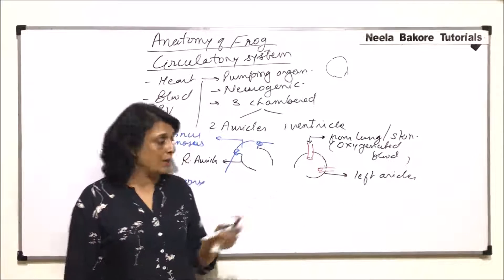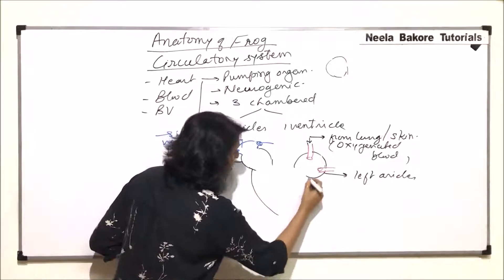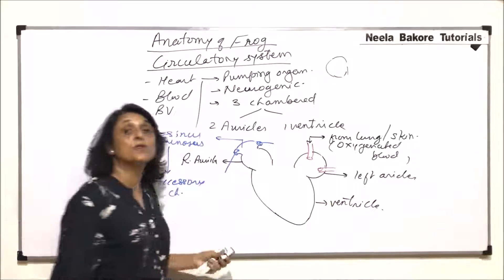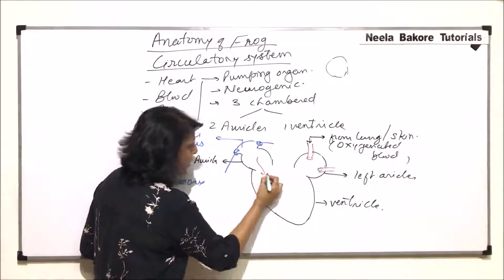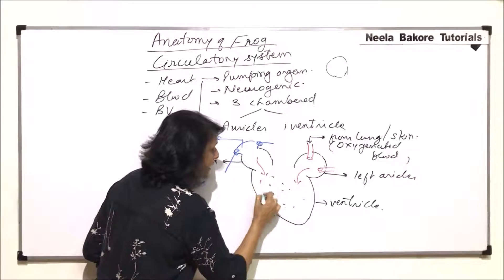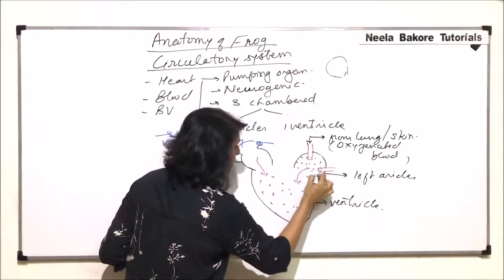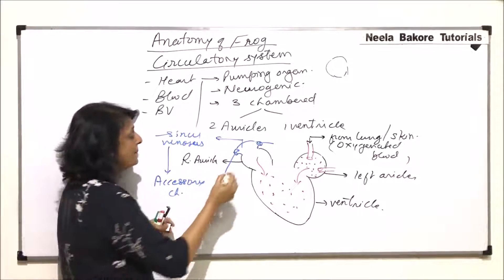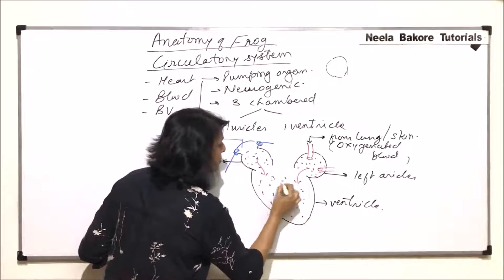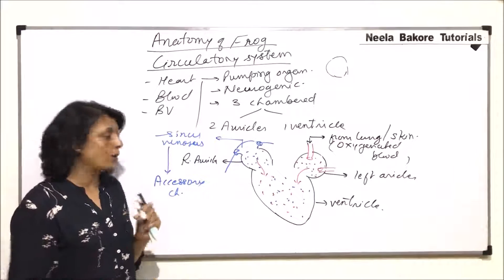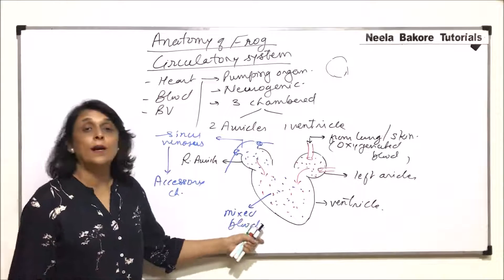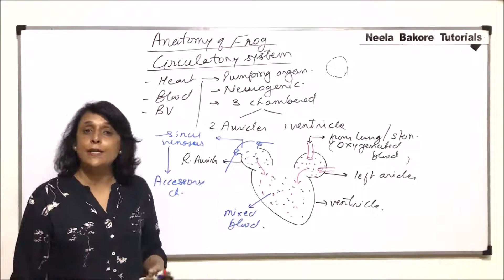Whatever oxygenation takes place in the lungs as well as through the skin, all that oxygenated blood comes to the left auricle. From both the auricles, the blood is pumped into one conical chamber — that is the ventricle. The ventricle receives both deoxygenated and oxygenated blood. Deoxygenated blood comes from the right side and oxygenated from the left, and in the ventricle there is mixing of blood — because there is no separation of oxygenated and deoxygenated blood.